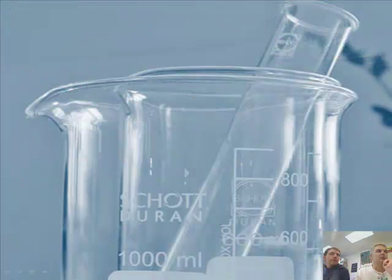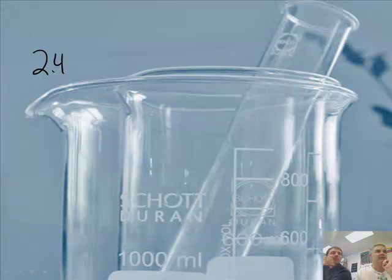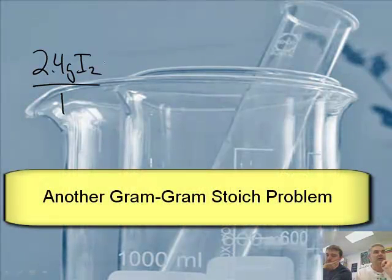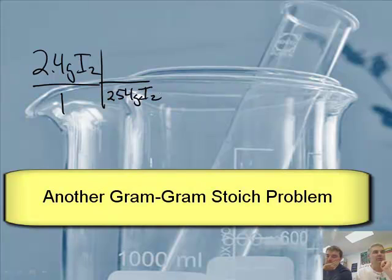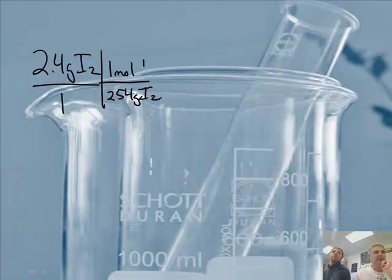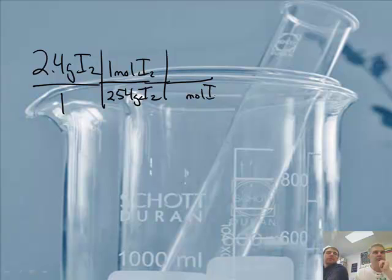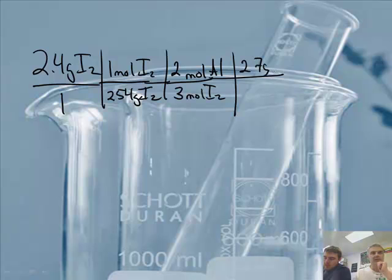Let's do it. So we're going to start with 2.4 grams of I2. I'm going to do a screen here. 2.4 grams of I2 over 1. And then there are 254 grams of I2 and 1 mole of I2. Then we're going to say moles of I2 to moles of Al. 2 moles of Al, 3 moles of I2. This was a 2 from the balance equation and this is a 3. And then we're going to say 27 grams of Al to 1 mole of Al. Just a gram, gram problem. We've done a bunch of these.